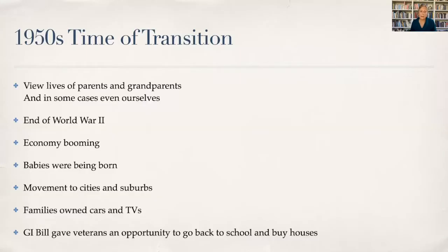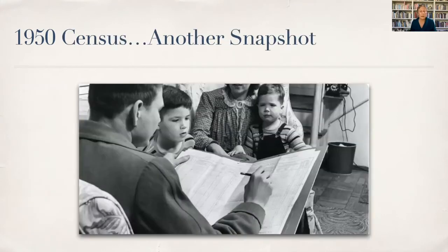Definitely a time of transition. We can see our parents and our grandparents — in some cases even ourselves. The economy's booming. Babies are being born. People are moving to the cities and suburbs from the farms. We've got cars and TVs. The GI Bill is giving veterans a chance to go back to school and buy houses. So the 1950 census is going to start to reflect some of this. And again, an enumerator is going to come to the door and speak to family members — this is the last time that a person will actually come to the door.